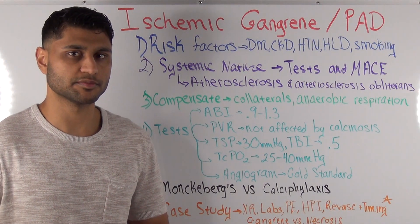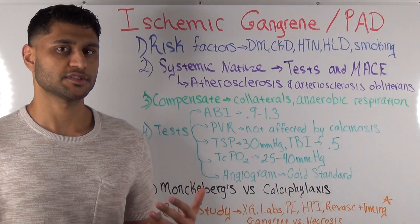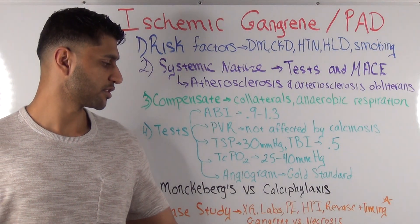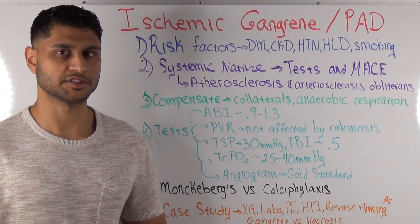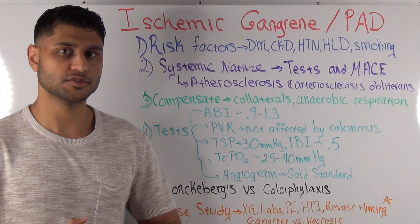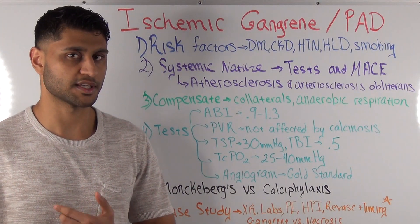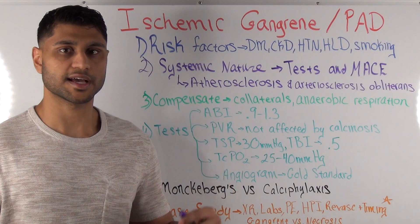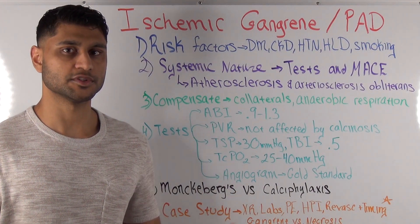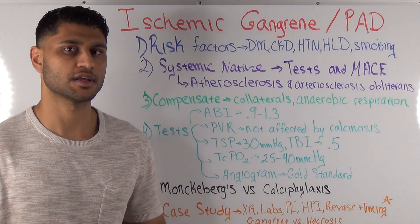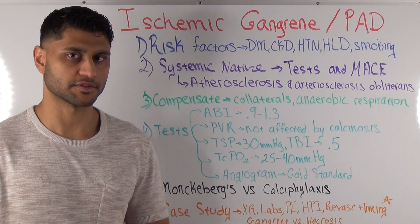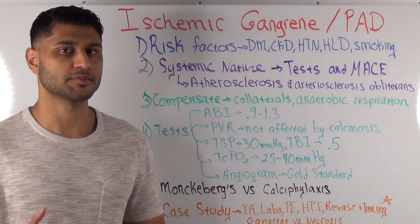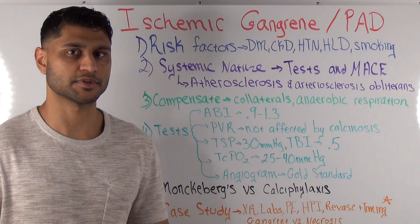An interview question may ask you to differentiate gangrene from necrosis. Necrosis is a general term for non-viable tissue and tissue death, which can be due to trauma, frostbite, or other causes. Gangrene is a type of necrosis, and within gangrene there are three main types you need to know: number one is dry or ischemic gangrene, number two is wet gangrene, and number three is gas gangrene.